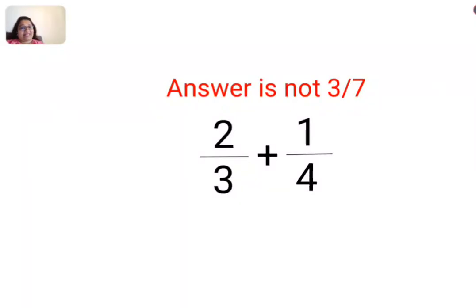Welcome everyone. The question here is 2 upon 3 plus 1 upon 4. What happens is a lot of people directly add the numerator and the denominator and get the answer as 3 by 7. That, my dear friends, is incorrect.